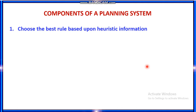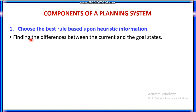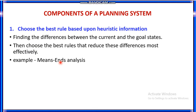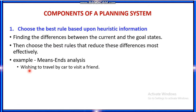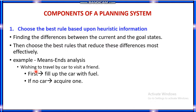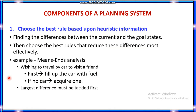The first component is choosing the best rule based on heuristic information. You have to find the differences between the current state and the goal state, then choose the best rule that reduces these differences — suitable for means-ends analysis. For example, if you wish to travel by car to visit a friend, you need to fill up the car with fuel, or acquire one if you have no car. The largest difference — the furthest from the goal — must be tackled first.